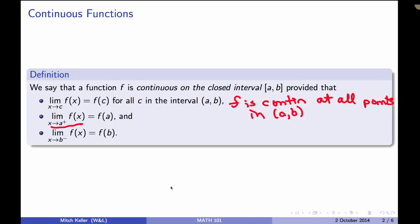And at b, we need the limit as x approaches b from the left of f(x) to equal f(b), because that's all that we can have. We don't know that there is a limit from the right at b, for example.